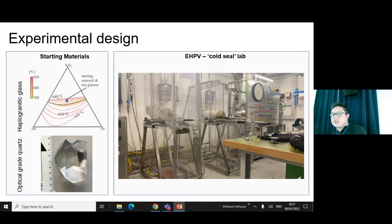As starting materials we have rhyolitic glass. As I told you, we like to simplify things, so we use a haplogranitic composition—no iron in it, which makes things a bit easier experimentally. We also have quartz. This quartz needs to be optical grade so it doesn't have any fractures or fluid inclusions in it.